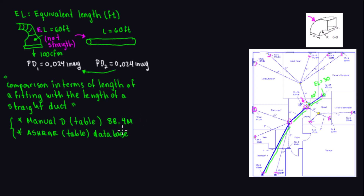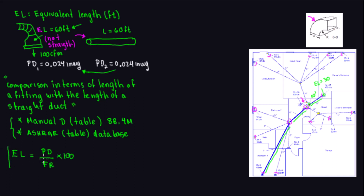Now, where does this equivalent length value come from — why does EL equal 60 feet in our example? The formula is the following: equivalent length equals the pressure drop (PD) divided by the friction rate (FR), times 100.